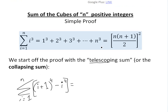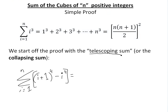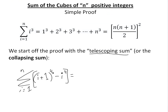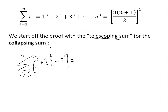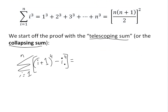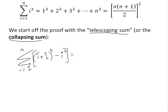Now we're going to start off with this telescoping sum, which I showed before in the squares video. It's just a useful tool. Before I had it to the power of 3; now I'm going to do a power of 4. It's useful because it collapses — it's usually called the collapsing sum — and you can use it to prove this. So basically, you have sigma, i is initially 1, up to n, of (i plus 1) to the power of 4 minus i to the 4.